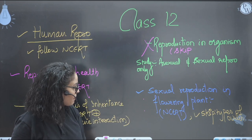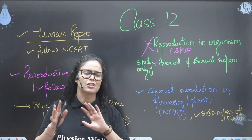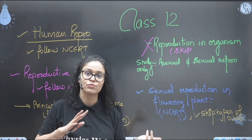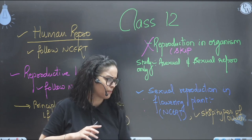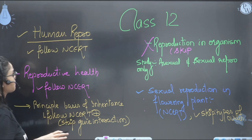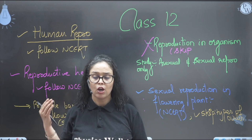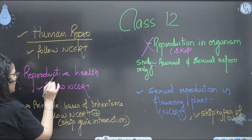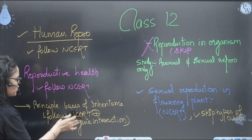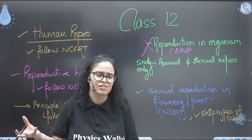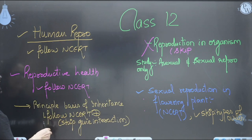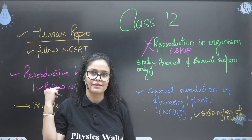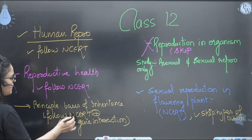For sexual reproduction in flowering plants, follow NCERT. You can skip types of ovules - it's not in NCERT anyway. For human reproduction, follow NCERT and skip unnecessary elaborations like types of eggs and types of cleavage. For reproductive health, follow NCERT only. For principles of inheritance, skip gene interactions like epistasis and duplication. Just follow NCERT, though sometimes you need to go a little beyond NCERT to understand certain topics.